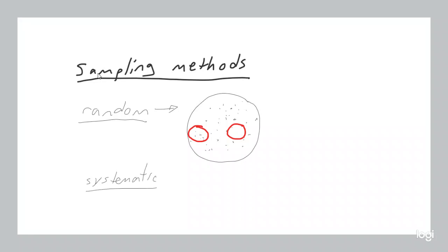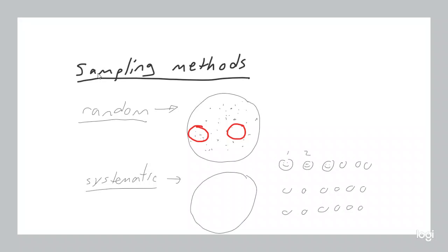Now compare that with systematic sampling. Systematic sampling is where you assign a number to every individual in a population — so here's your people, assigning numbers 1, 2, 3, 4, 5, 6 and so on up through 13, 14, 15, 16, 17, 18 — and then you select every person whose number is divisible by a certain value.